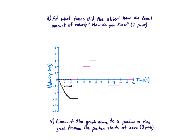For the next segment the velocity is one meter per second, so the position goes up one meter in that second. For the following segment the velocity is two meters per second, so the position goes up two meters in one second. Then for the last part of this first section the velocity is three meters per second, so it moves three meters in one second. I'll change colors for the line since it's getting a bit busy.